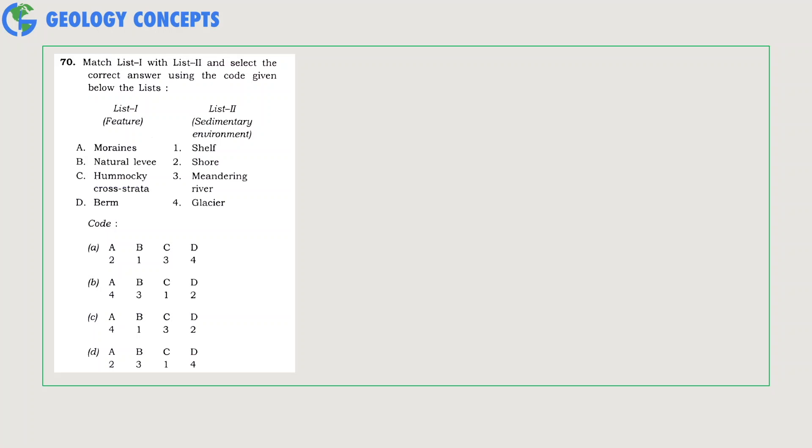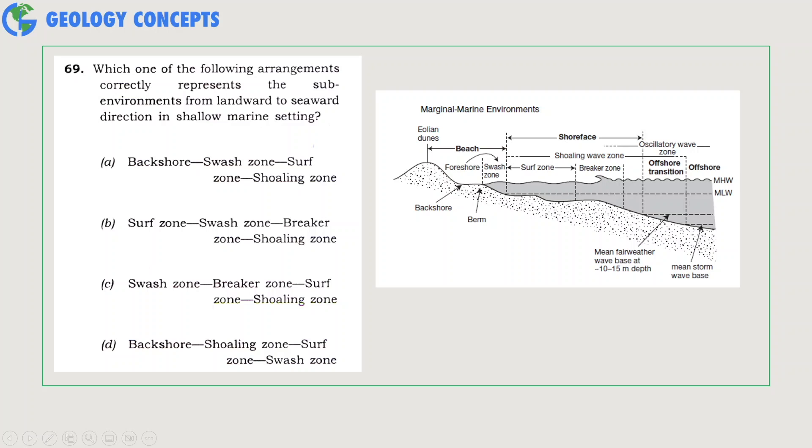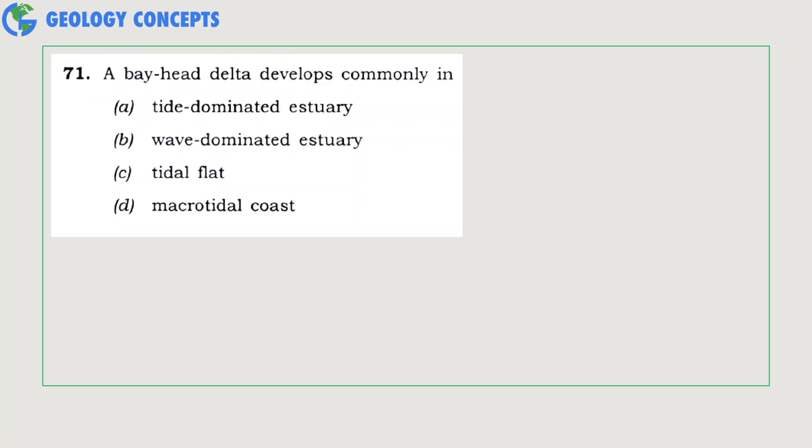The next question asks us to match the features with their respective sedimentary environments. Options A and B are well known: moraines are glacial deposits and natural levees are associated with meandering rivers. But the berm is a ridge located to the rear of a beach immediately above the mean high water level. It is marked by the break of slope at the seaward edge. It separates the foreshore from the backshore. So berm is a feature associated with the shore, which is of the shoreline zone which extends to the shelf. So option B is the right answer here. You can see berm from here—it's a shore zone feature.